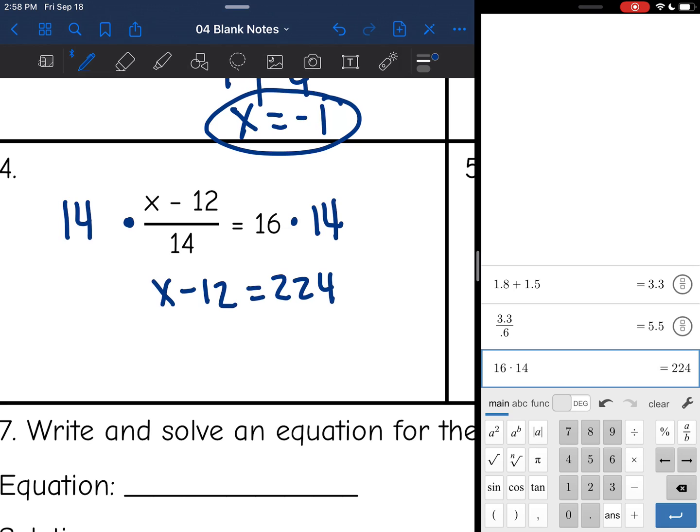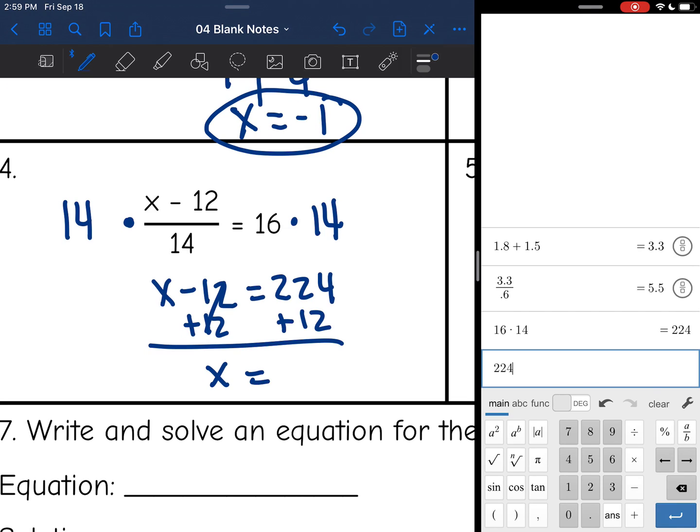And then my last step to get x by itself is to get rid of this minus 12. So I'm going to add 12 to both sides. And I get x equals 224 plus 12 is 236.